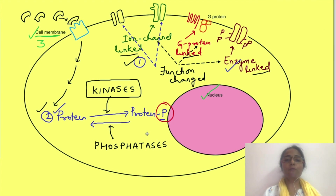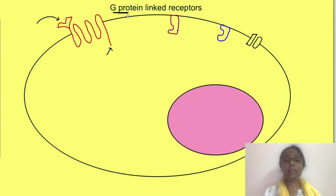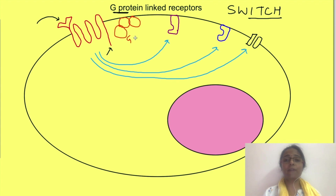Now we will focus on what intracellular events take place when a ligand binds to G protein-linked receptors. These receptors have an extracellular binding site to which the hormone binds, and an intracellular cytoplasmic tail region to which G proteins may bind. G proteins act as a switch and functionally couple the receptor to their target enzymes or ion channels. These heterotrimeric GTP-binding proteins consist of three subunits: G alpha, G beta, and G gamma, present as an inactive complex bound to the membrane near the hormone receptor.